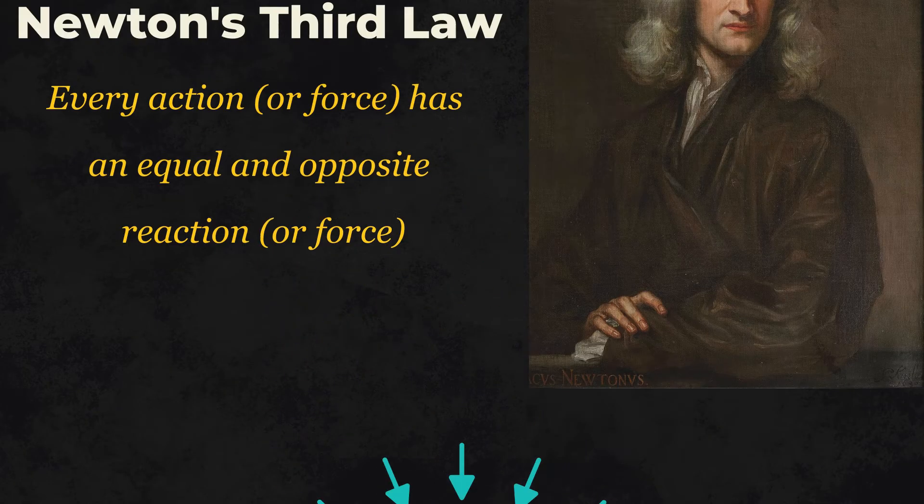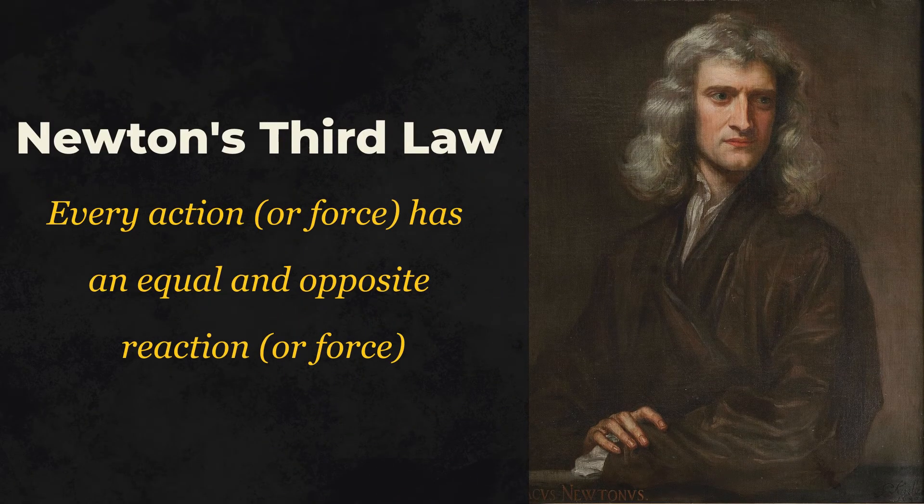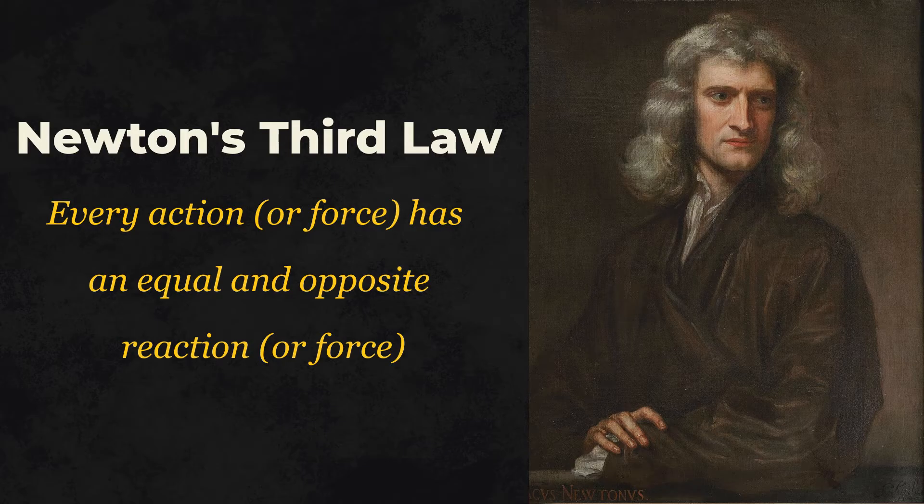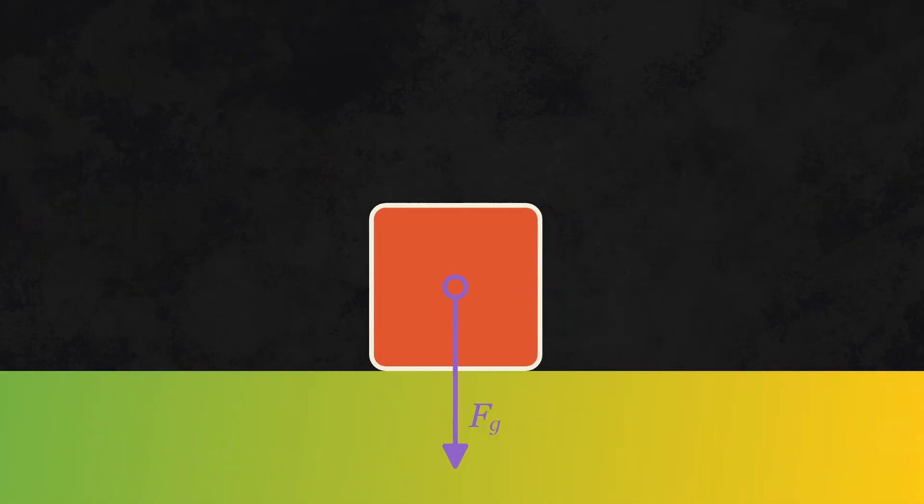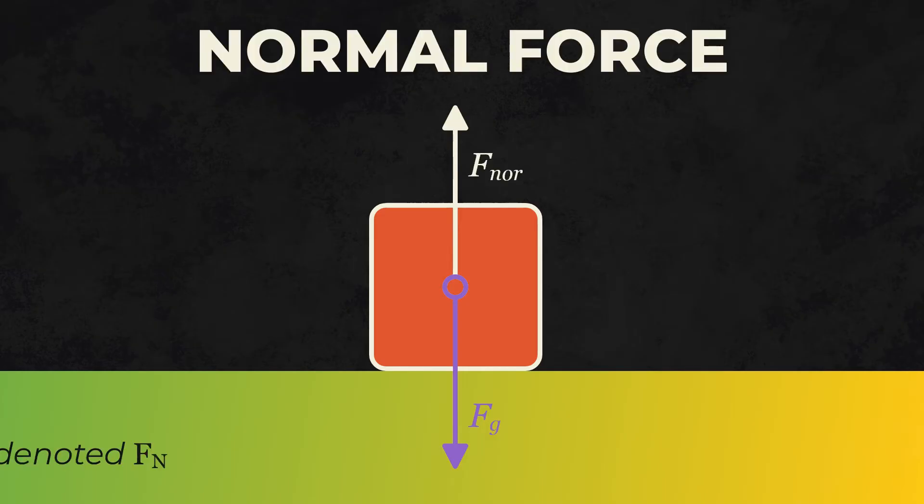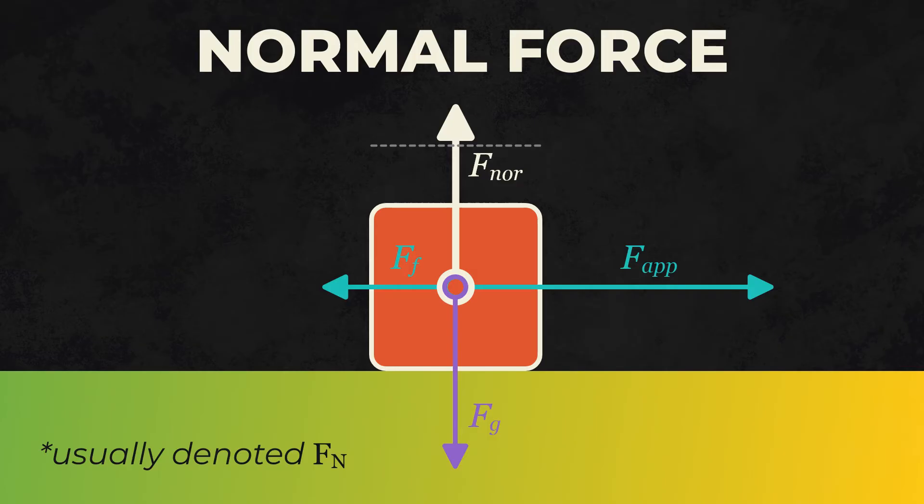However, because of Newton's third law, which states that every action has an equal and opposite reaction, if an object isn't moving, there must be an equal force pushing in the opposite direction as the gravitational force. This is called the normal force. The normal force is always perpendicular to the surface that an object is resting on, and if that surface is flat, its magnitude is equal to the magnitude of the gravitational force, except it's in the opposite direction.